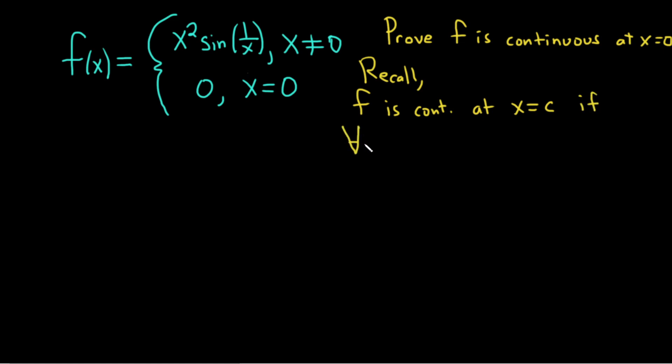if for all epsilon greater than 0, there exists some number delta greater than 0, such that for all x in the set of real numbers with the following condition, the distance between x and c is less than delta,